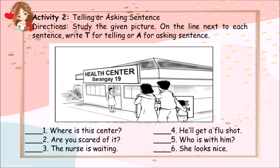Activity 2 is about telling or asking sentences. Study the given picture. On the line next to each sentence, write T for telling or A for asking sentence. 1. Where is the center? 2. Are you scared of it? 3. The nurse is waiting. 4. He'll get a flu shot. 5. Who is with him? 6. She looks nice.